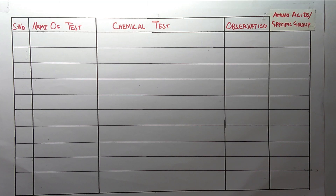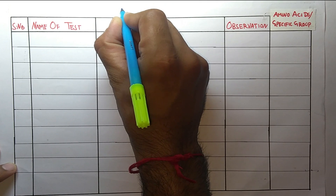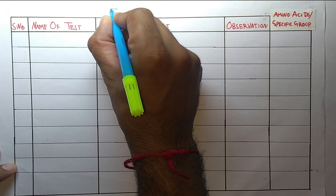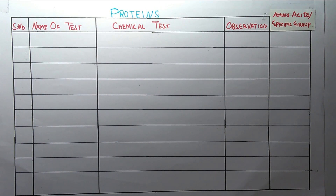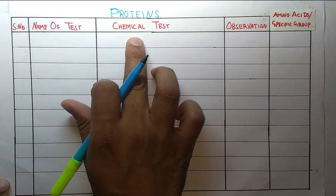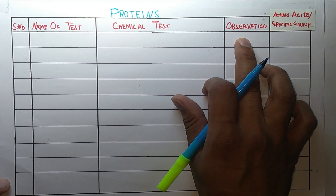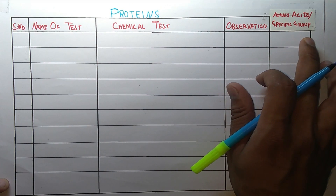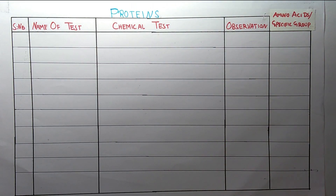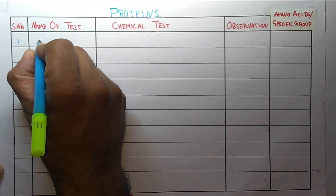Hello students, welcome to the channel Pharma4U. Today in this video we are going to talk about the chemical tests for proteins. We will discuss the name of the test, the reagent, the color or observation, and the amino acid or specific group which confirms the presence of particular groups. The first test is the Biuret test.